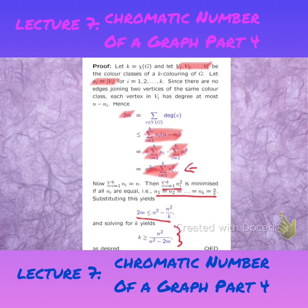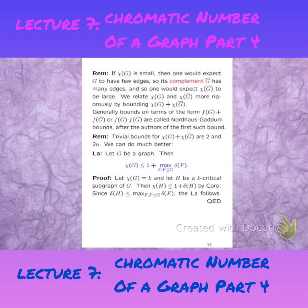By investigation, if you increase M, you decrease the denominator, and by decreasing the denominator you are going to increase the chromatic number, which makes perfect sense. So if the chromatic number is small, then obviously one would expect G to have few edges.